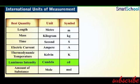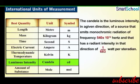Luminous intensity is measured in candela, denoted by the small letters cd. A candela is the luminous intensity in a given direction of a source that emits monochromatic radiation of frequency 540 × 10¹² hertz and that has a radiant intensity in that direction of 1/683 watt per steradian.